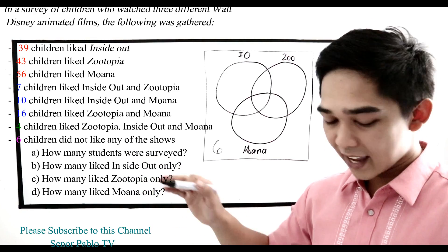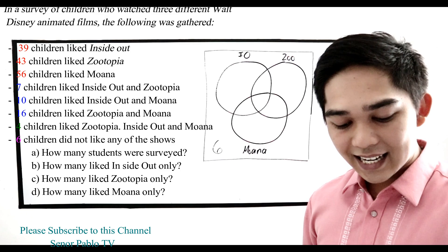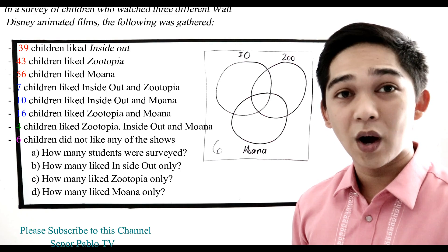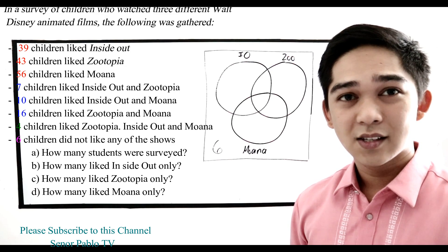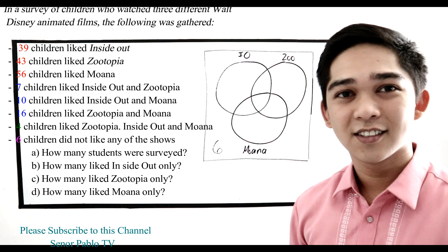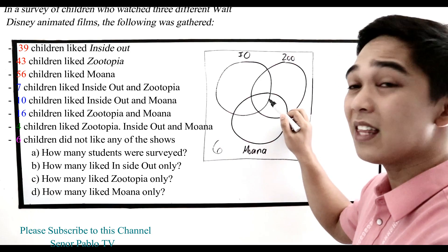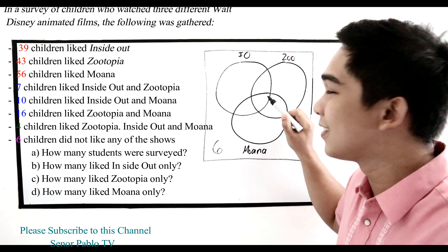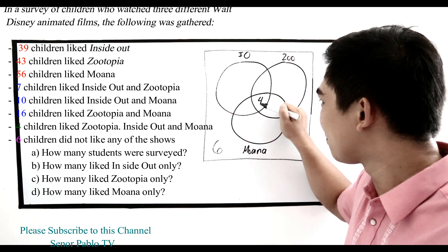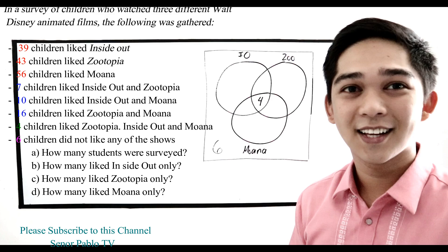Next, 4 children like Inside Out, Zootopia, and Moana — they like all three. So we place 4 at the intersection of all three circles.